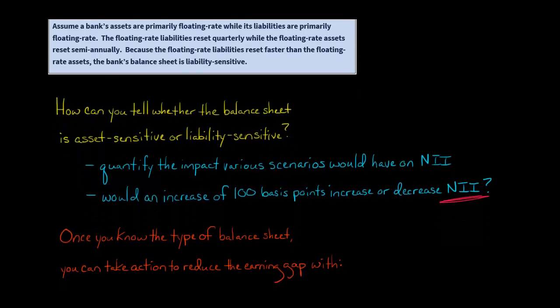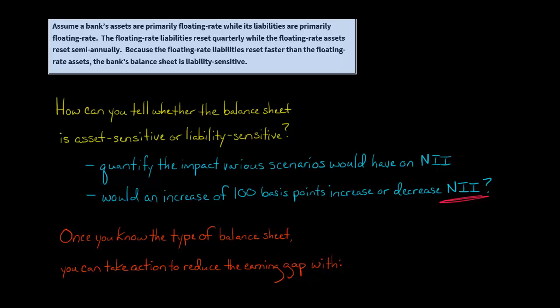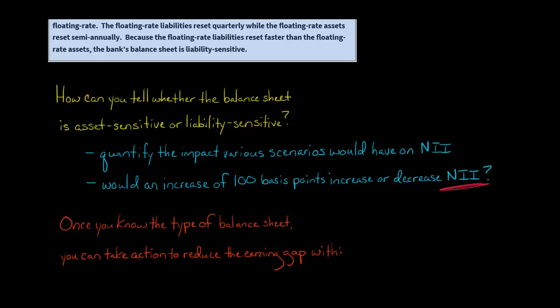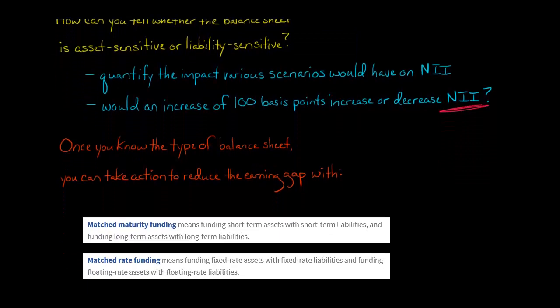Once you know that — whether it's an asset sensitive or liability sensitive balance sheet — what do we do with that? Once we know the type of balance sheet, we can take action to reduce the earning gap. The earning gap, which we talked about in a previous video, is just the difference between the rate sensitive assets and the rate sensitive liabilities, and that's going to affect how exposed the bank's net interest income is to changes in interest rates.